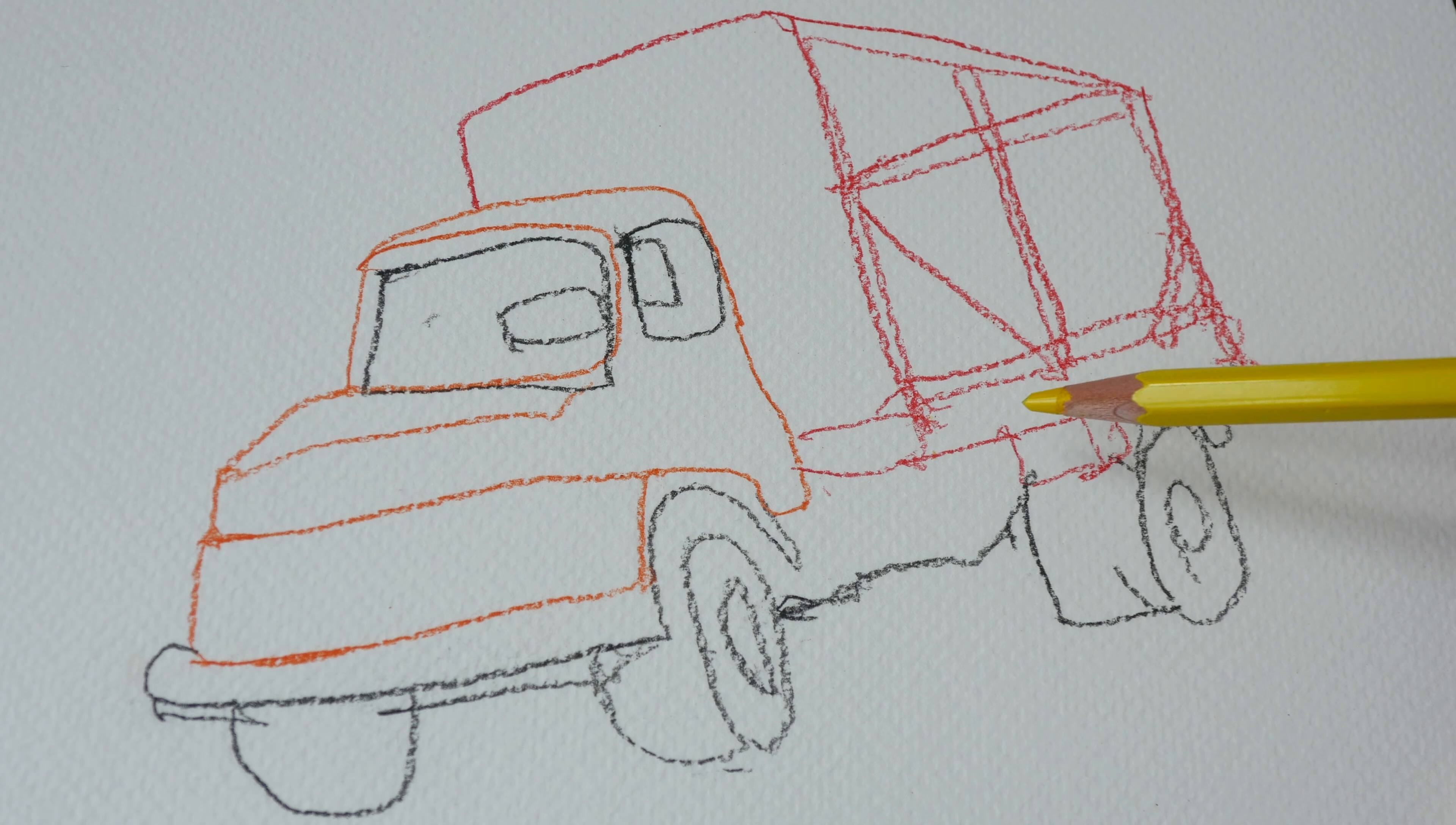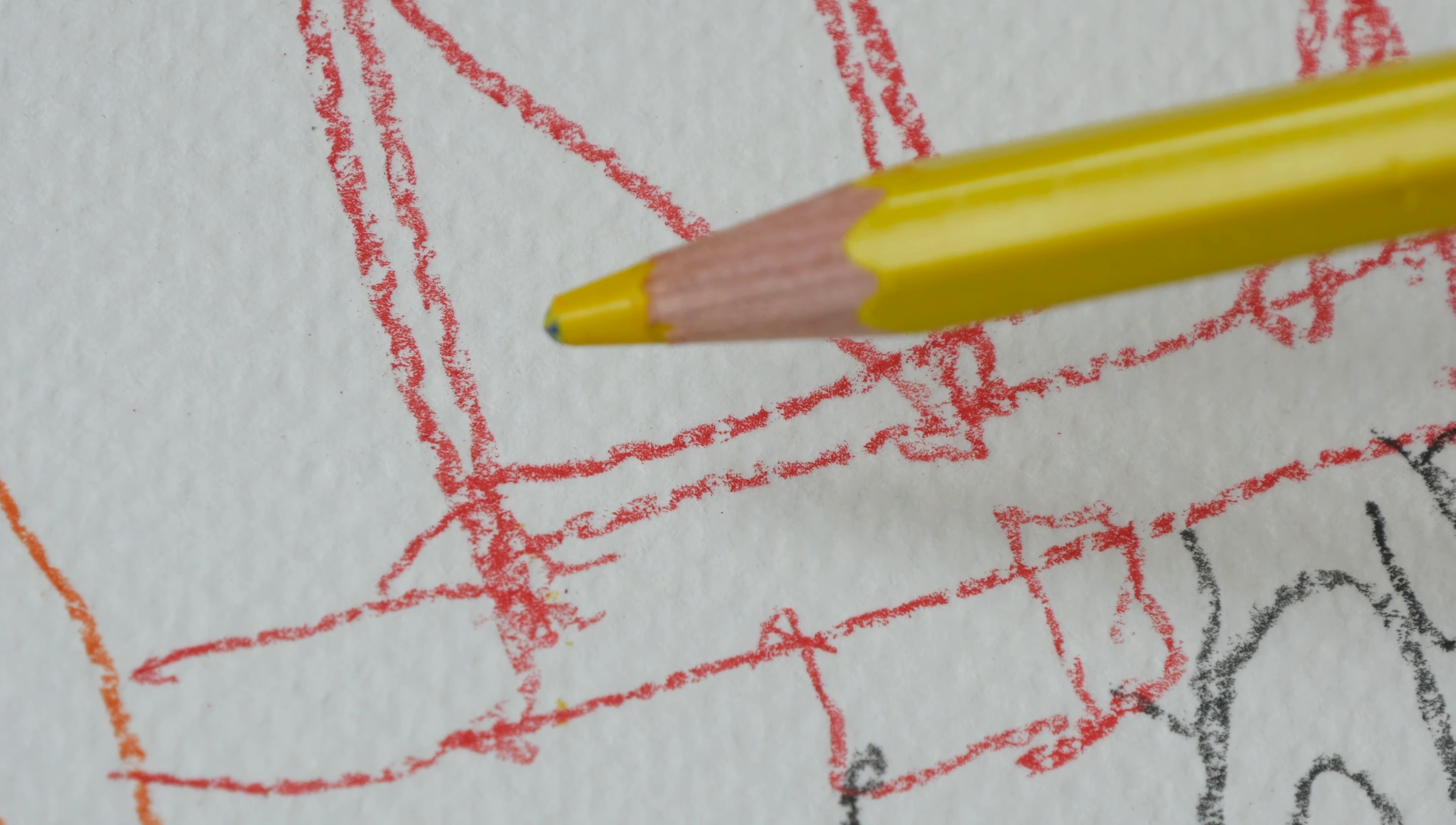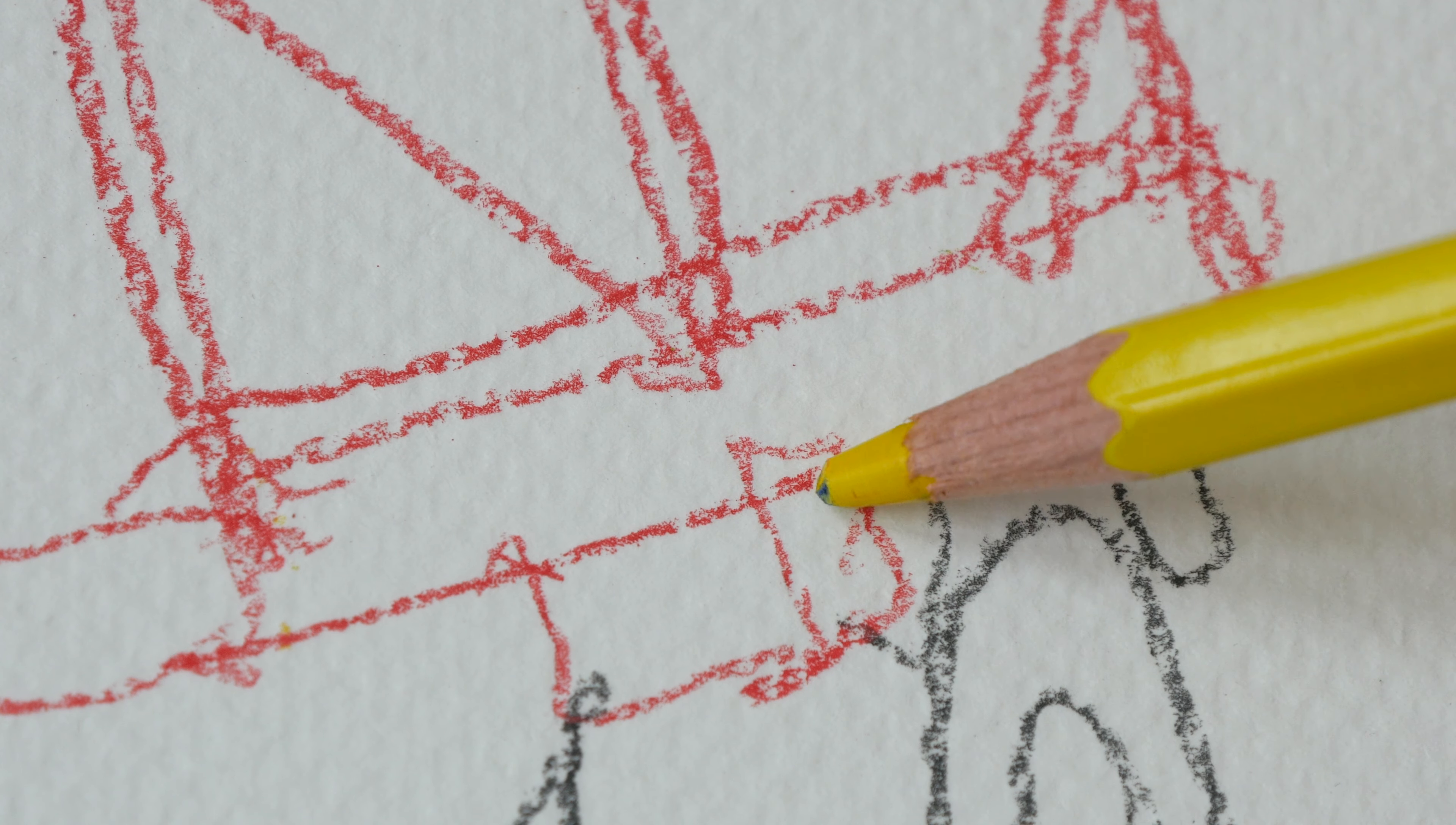This is how colored pencil looks on cold press watercolor paper. The lines are very rough. The colored pencils will get blunt very quickly and it's very difficult to draw really thin lines or details. And you can see a lot of white of the paper because the lines break up so easily.